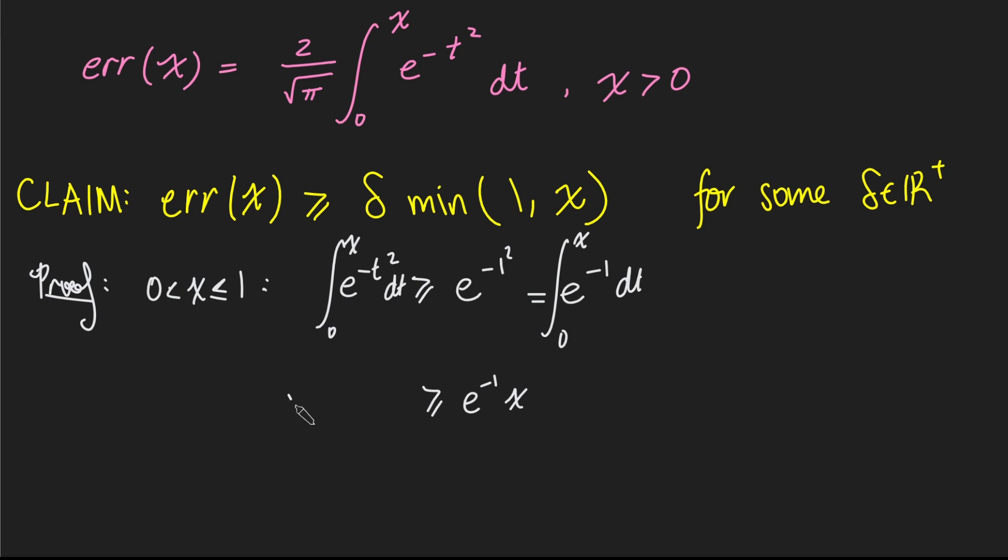Well, this is very similar to the error function. In fact, it's root pi over 2 times the error function of x. And so rearranging this gives us the error of x is at least 2e to the negative 1 over root pi times x.